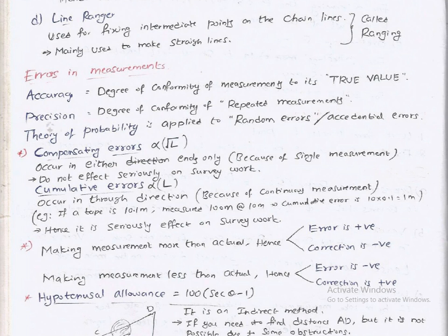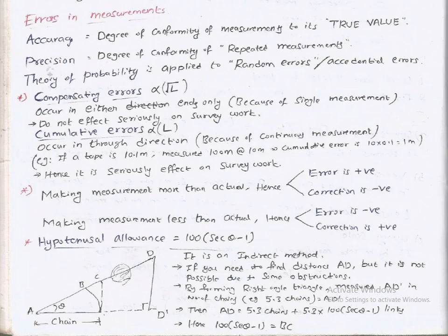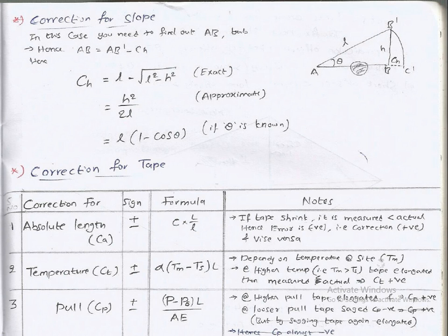Hypotenuse allowance: correction equals 100 upon sec theta minus 1 or 100 times sec theta minus 1. It is indirect method if you need to find the distance AD but it is not possible due to single obstruction. By forming right angle triangle, measured AD in chains. Correction for slope: to find AB, AB equals AB prime plus CH where CH equals L minus square root of L square minus H square exact, equals H square upon twice L approximately, equals L times 1 minus cos theta if theta is known.